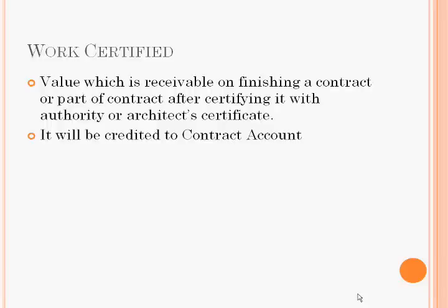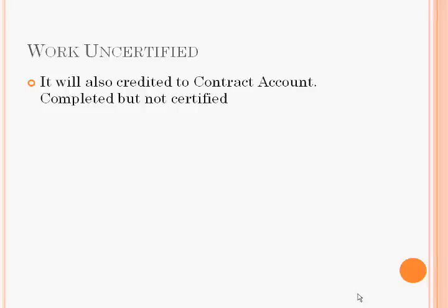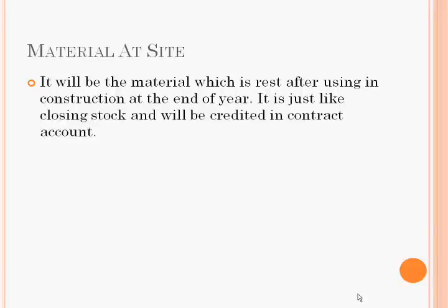Work certified is the value which is receivable on finishing a contract or part of a contract, after certifying it with an authority or architect's certificate. This certificate is made by the architect who is appointed by the contractee. Work uncertified is work which is complete but not yet certified. Both work certified and uncertified go to a work-in-progress account. Material at site is the closing stock which has not been used in that construction.